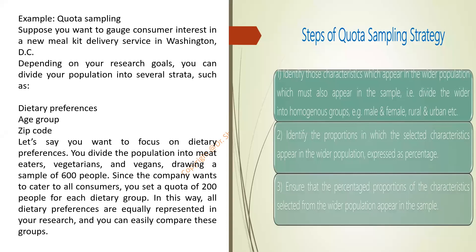What steps are needed in quota sampling strategy? First, you have to identify those characteristics which appear in the wider population. Here we have taken the example of male and female — gender is one characteristic, another can be rural or urban. Then you have to divide the wider population into homologous groups such as male, female, urban, or rural, maintaining whatever percentage of male and female exists in urban and rural population into your sample size.